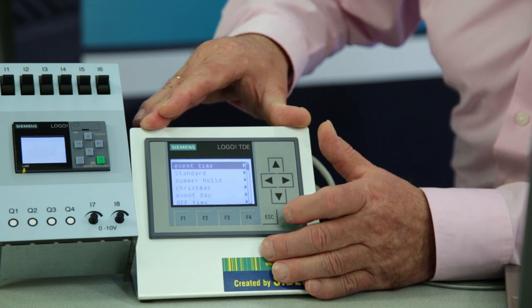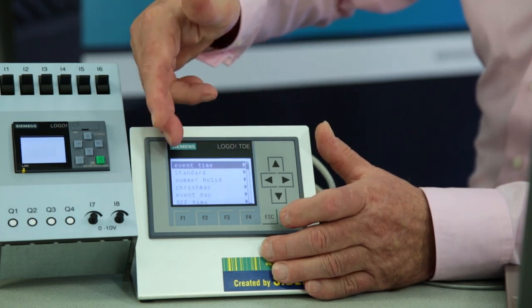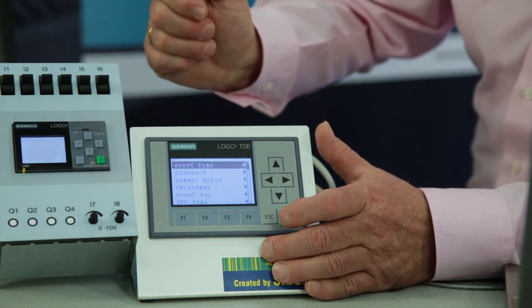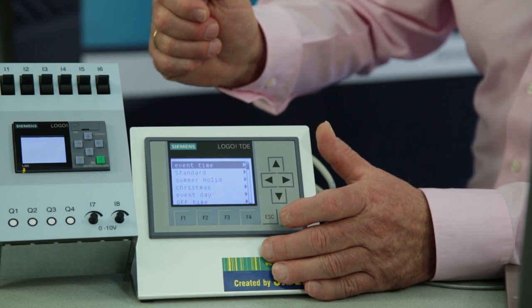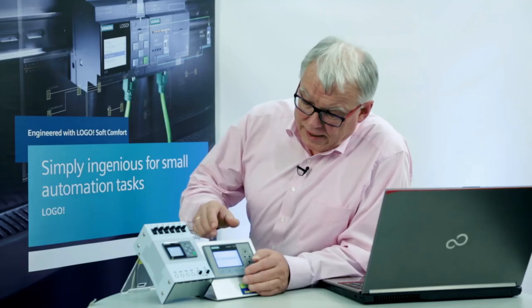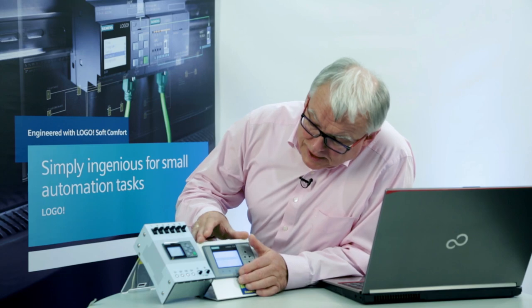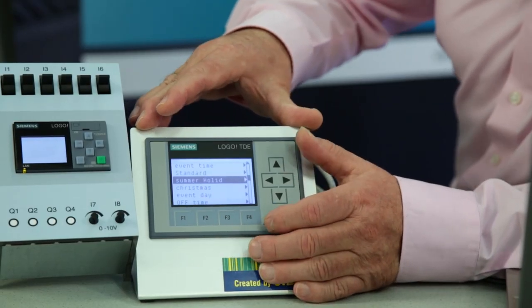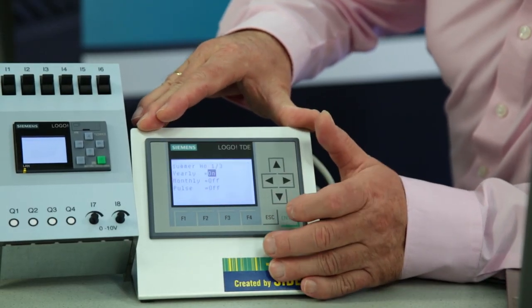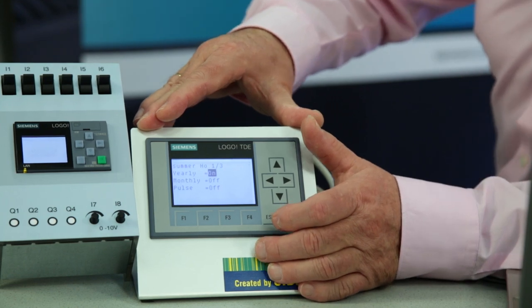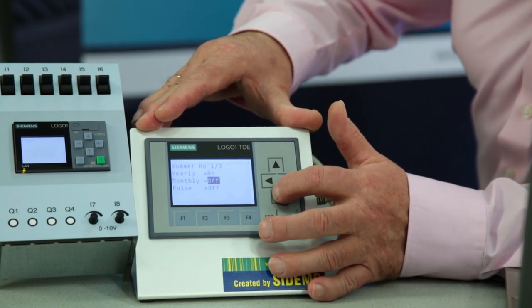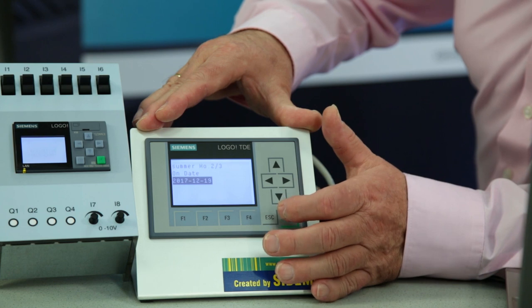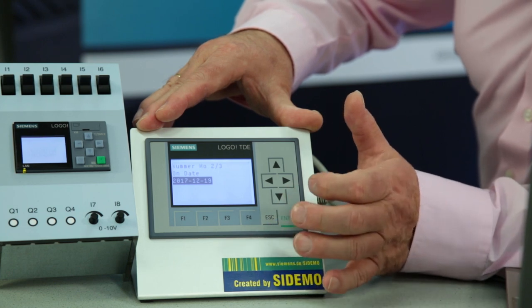When I select this function, an entire list of function modules appears in which parameters can be changed. From this list I now choose the holiday timer so that I now see the parameters currently set and can work my way through the parameter list item by item.